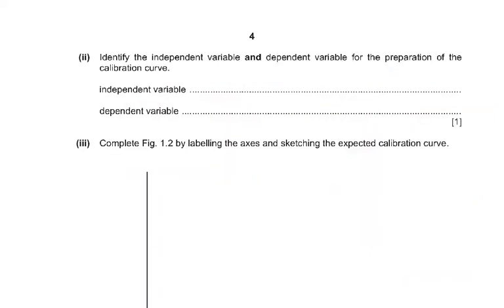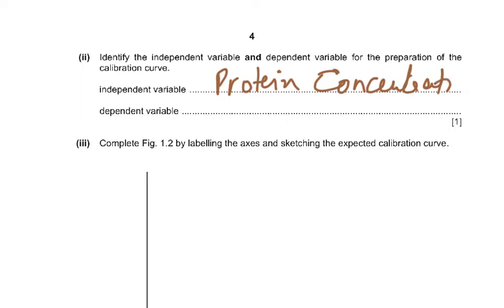The favourite question — which everybody should get right — is to identify the independent and dependent variable for the preparation of the calibration curve. The independent variable, what you are changing, is the protein concentration. The dependent variable, what you are measuring, is the absorbance of light — how much the colorimeter reads as the absorbance of light.